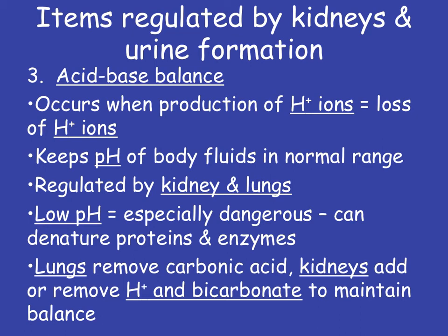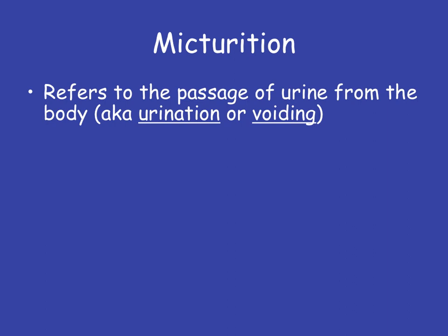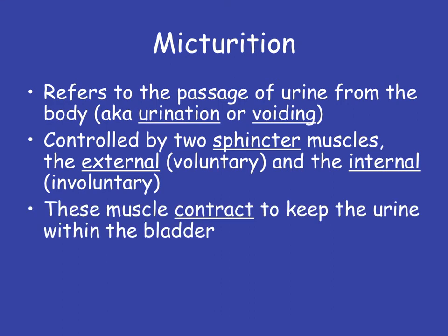The last process to look at before our diagrams is the process of micturition. Micturition is basically the fancy medical term for urination or voiding. This is actually controlled by two sets of sphincter muscles. There is an external set, which is more towards the outside of the body — those are our voluntary ones, the ones we have to learn to control as children when we get potty trained. The internal ones are the involuntary ones; we never get control of those. When these muscles are contracted, the urethra — which leads from the urinary bladder to the outside of the body — is closed off, keeping the urine within the bladder.